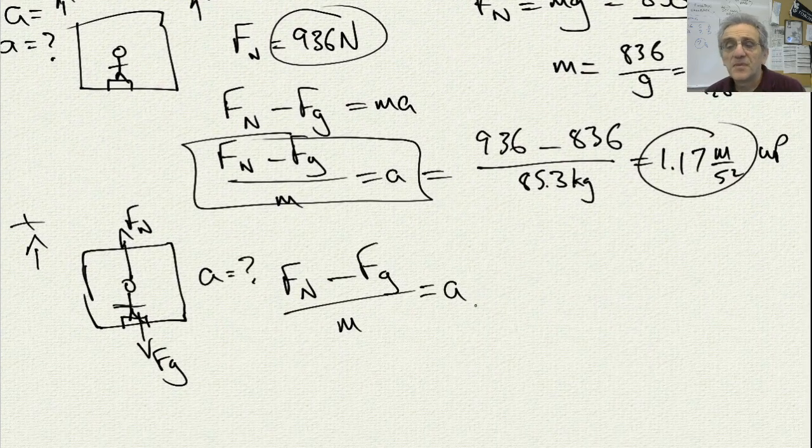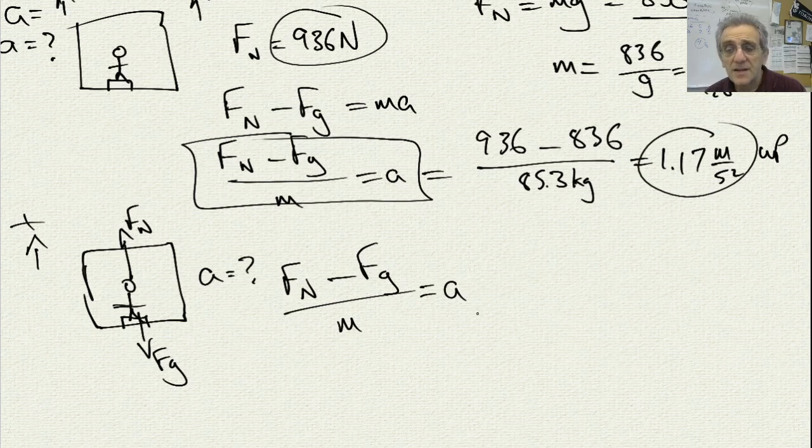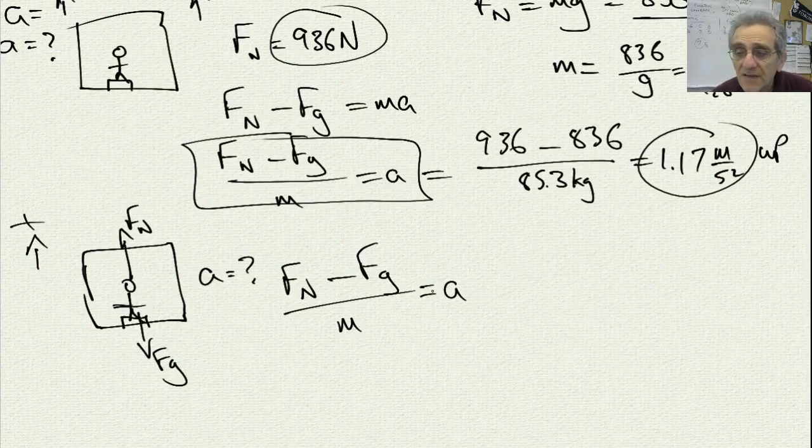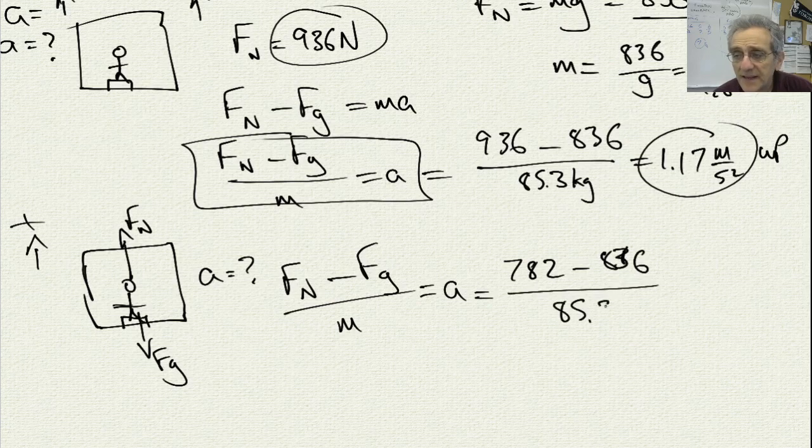And there it is again, but this time it says that the normal force is 782. But we minus the 836 and we divide by the mass again and we get negative 0.63 meters per second squared.